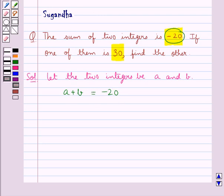In the question we are given that if one of the integers is 30, so let one of the integers, say A, be equal to 30. Therefore, we have 30 plus B is equal to minus 20.